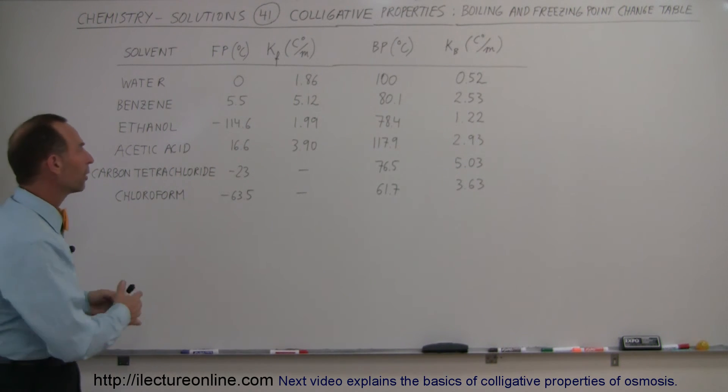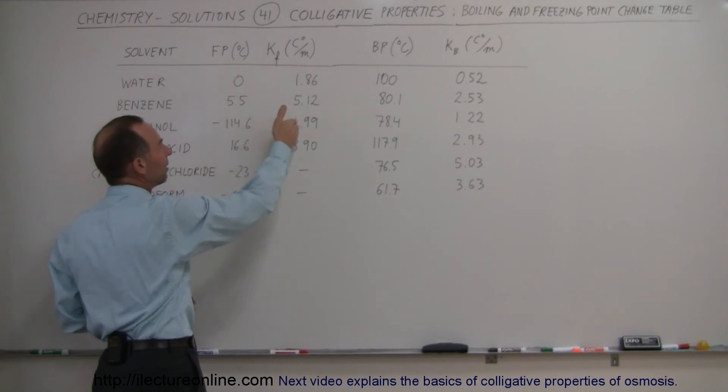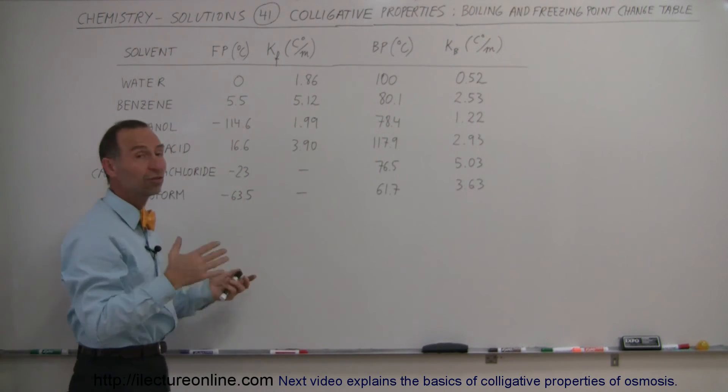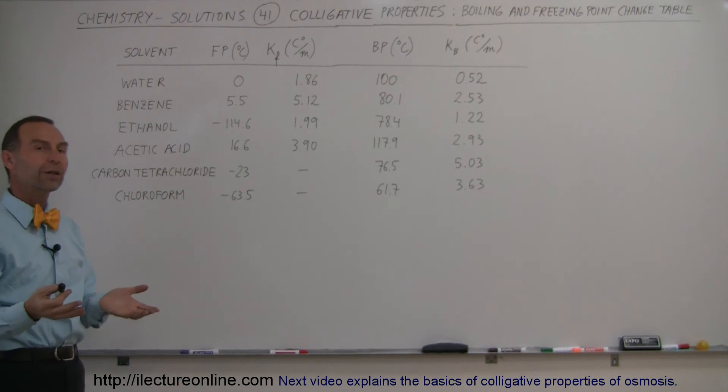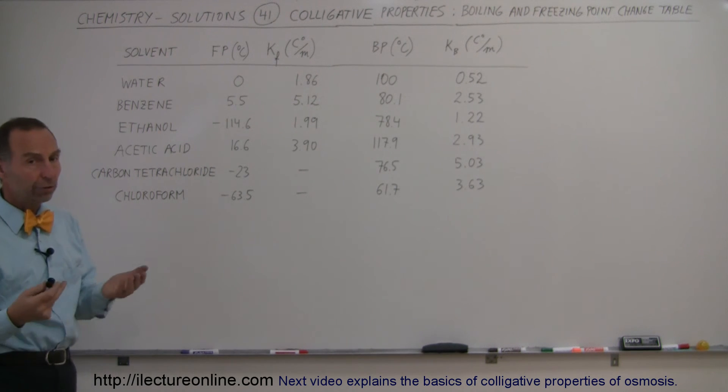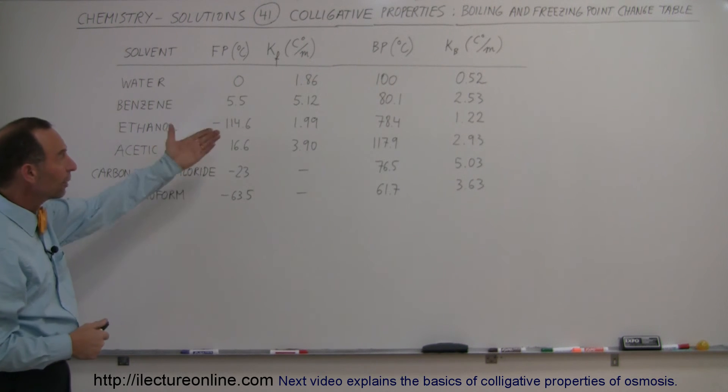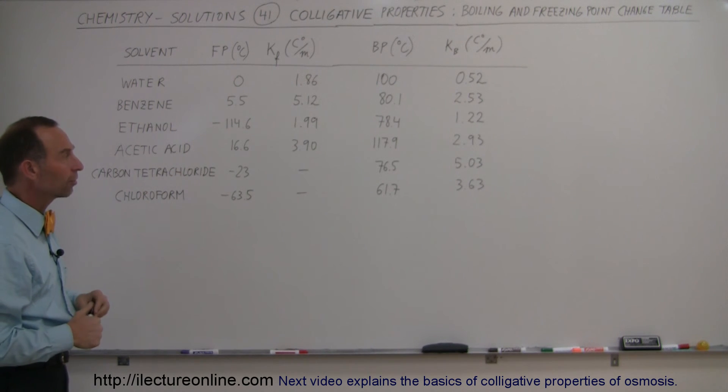So by knowing what their freezing points are and then knowing how easily or how difficult it would be to change the freezing or boiling points, you can actually control at what temperature they will freeze or boil for practical use by simply adding a certain amount of solute based upon those constants.